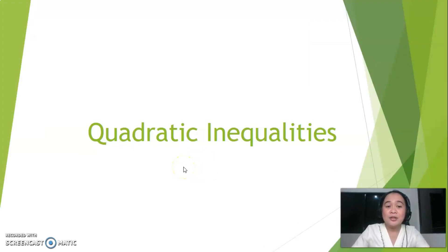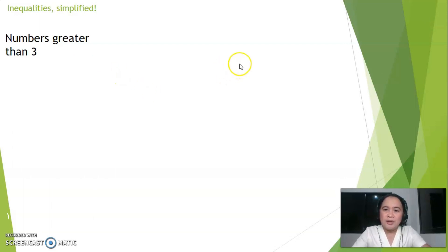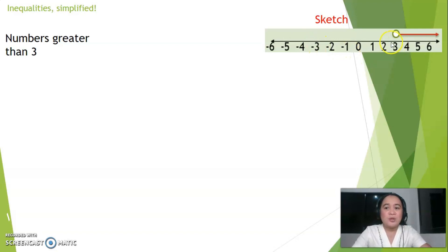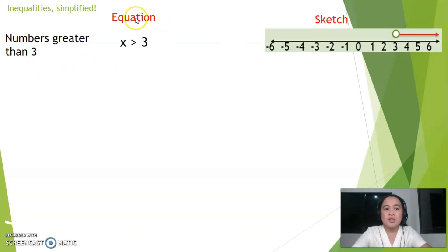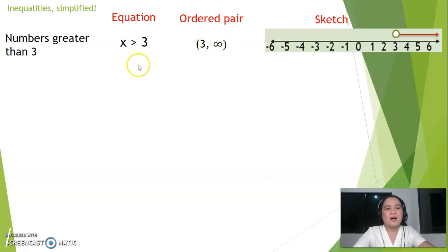Hello everyone. In this video we will learn all about quadratic inequalities. To begin, let's review: how are you going to express numbers that are greater than three? There are different ways. One way is the sketch form — all numbers to the right of three are greater than three. In equation form: x is greater than three. In interval notation: parenthesis three comma infinity parenthesis.